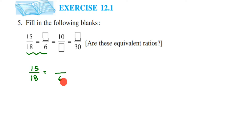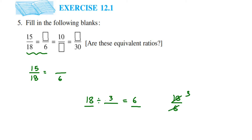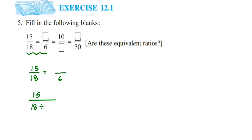We need to find what number divides 18 to give 6. The answer is 3, because 18 divided by 3 equals 6. If you're unable to find the number directly, divide the two denominators: 18 divided by 6 gives 3. So we divide both numerator and denominator by 3. 18 divided by 3 is 6, and 15 divided by 3 is 5.